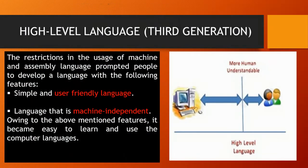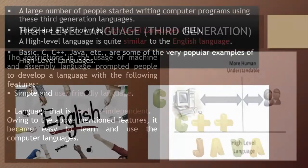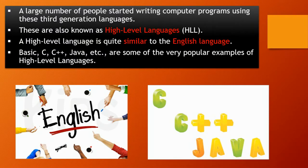In the third generation, more developments were made. We use high-level language. The restrictions in the usage of machine and assembly language prompted people to develop a language with new features. This language is very easy and user-friendly, meaning it can be easily understood by the user. It is machine-independent, unlike the first and second generation languages. We can make a program on one machine and take it anywhere — any machine — and the program will work there. A large number of people started writing computer programs using these third-generation languages.